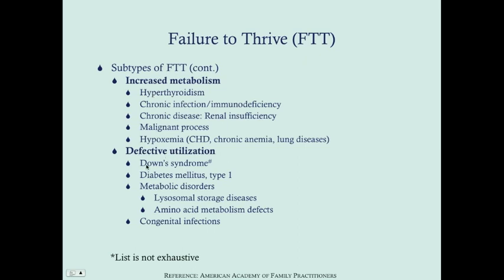Finally, defective utilization — this can be something like Down syndrome. With Down syndrome, we actually use a special growth chart because we know they have a slower growth, so we don't mistakenly diagnose failure to thrive. Diabetes mellitus type 1 can cause defective utilization because sugar is not getting into the cells. Metabolic disorders such as lysosomal storage diseases and amino acid metabolism defects. Congenital infections can also lead to defective utilization of nutrients. This list is not exhaustive but covers the common ones.